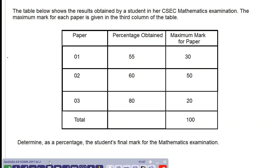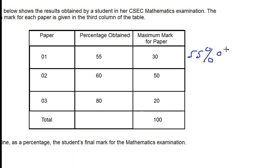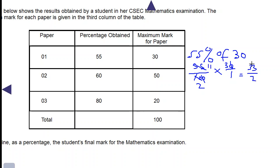We have to find how many marks the student got in each of the papers. So if the percentage for paper 1 is 55%, let's find 55% of 30. That will be 55 over 100 times 30 over 1. Canceling zeros — 5 into 10 is 2, 5 into 55 is 11 — we have 33 over 2. 11 times 3 is 33 over 2, which gives us 16 and a half as the mark out of 30 for paper 1.